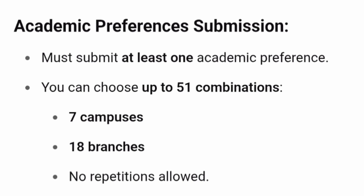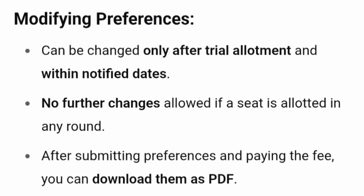For academic preference submission, you must submit at least one preference, and you can choose up to 51 combinations. If 7 campuses and 18 branches are available, you can put up to 51 combinations — that is the maximum limit. Preferences can be changed only after a trial allotment and within the notified dates. No further changes are allowed once a seat is allotted in any round, so please remember that preference can be changed only once.